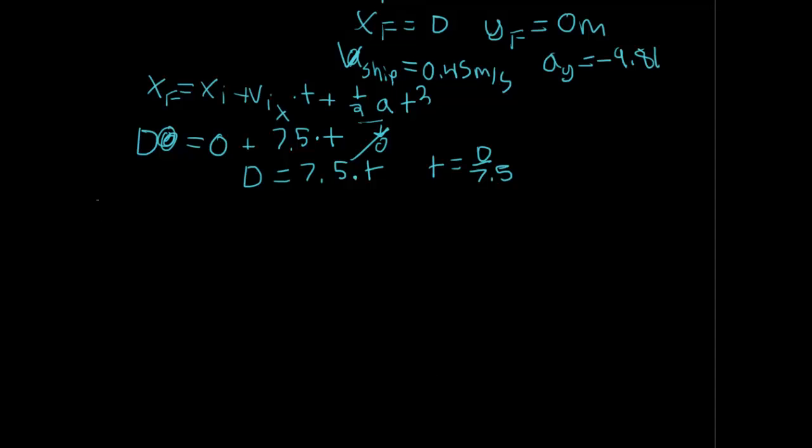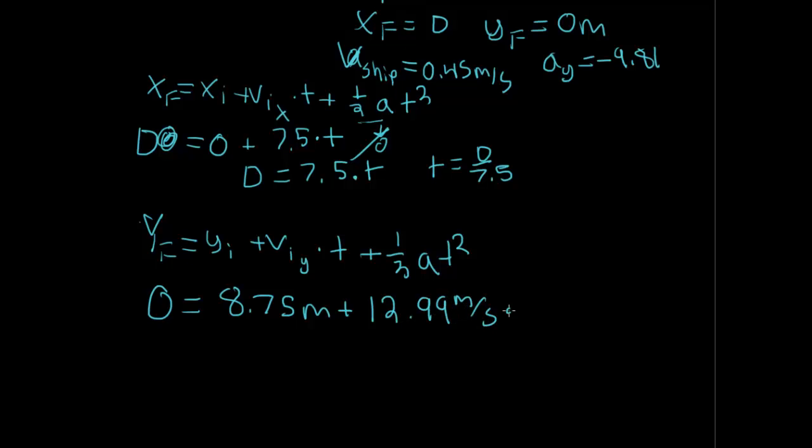Moving forward, the real equation here that you want to use is this equation, but in the form of the Y components. So, Y final equals Y initial, plus velocity initial in the Y direction, times T, plus 1 half acceleration, T squared. We know Y final is going to be 0. Y initial is 8.75 meters. Our velocity we calculate to be 12.99 meters per second. We're trying to calculate time here. Plus 1 half, times negative 9.81, times T squared.